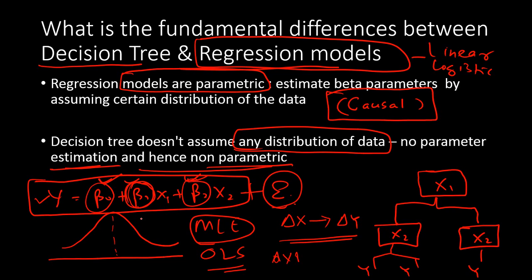I can't do that in a decision tree. It can always predict the target variable, but I cannot say for sure how much an increase in one predictor will change the target variable. So decision trees are more limited in terms of finding the relationship between predictors and target variable. With regression, you also have the advantage of the clear sign of the beta parameters — positive or negative — so you can clearly say that x1 affects y negatively or positively. That interpretation is much easier with a regression model.